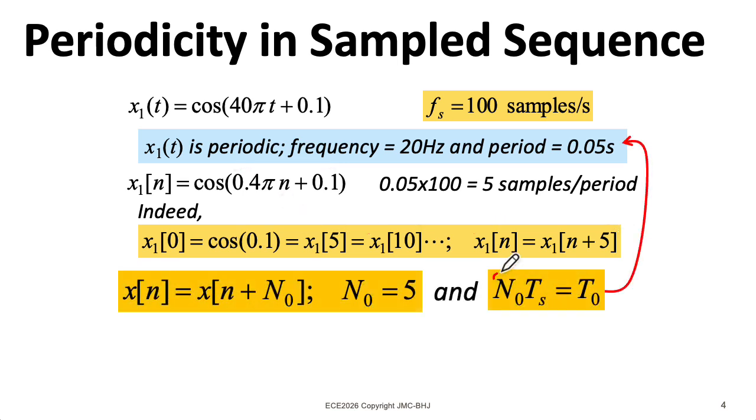And if we multiply the number of samples per period times the sampling period, and we're using period in two different ways there, we wind up with the period of the original continuous time wave. So yeah, this equation has three different uses of the word period, which is a bit confusing.